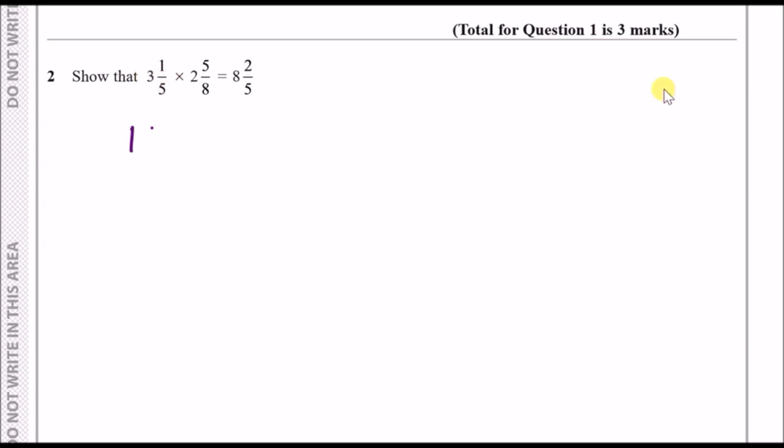For the second fraction do the same thing: 2 times 8 is 16, 16 plus 5 is 21, so it's 21/8. The way I would approach this is multiply these head-on and write 16 times 21 in the calculator which gives us 336.